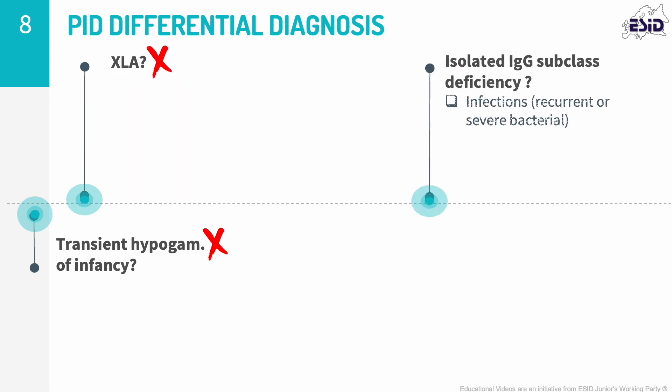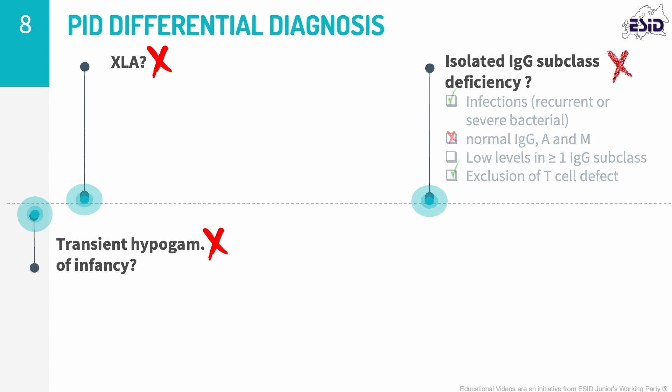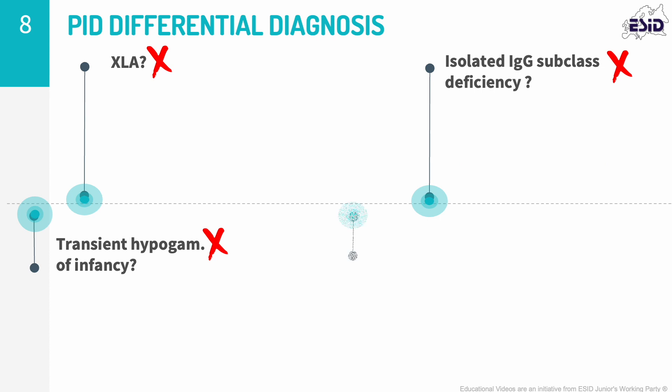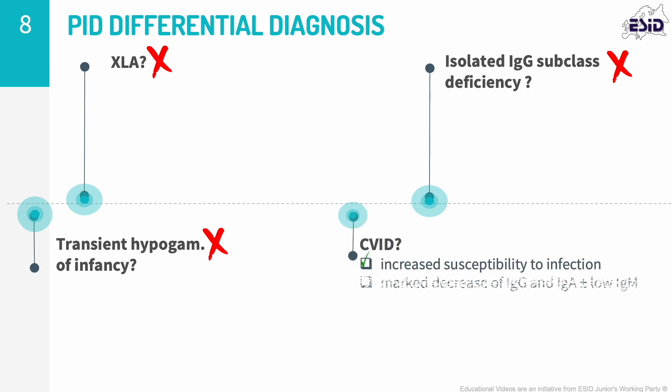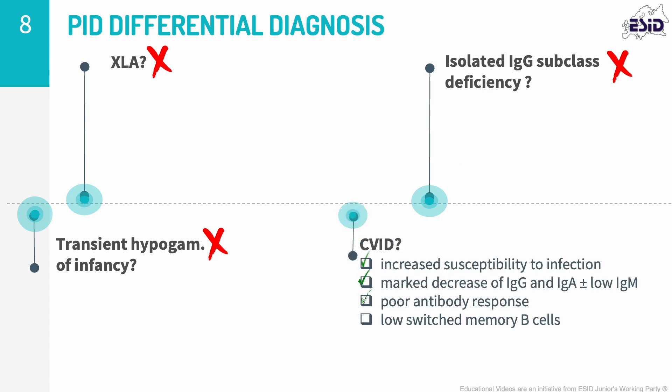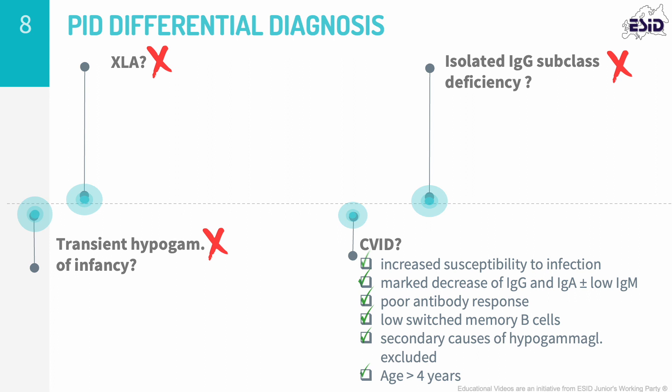Isolated IgG subclass defect was excluded by the fact that both IgA and IgM were also absent. Clinical and immunological features were consistent with the diagnosis of CVID. CVID is defined as a marked decrease in serum IgG — two standard deviations below the normal — with a decrease in IgA and/or IgM, a poor antibody response to unconjugated vaccines, and the exclusion of secondary causes of hypogammaglobulinemia.